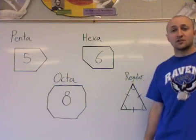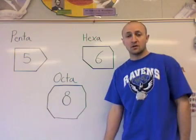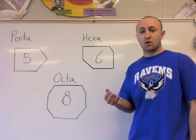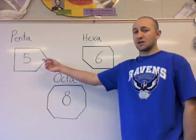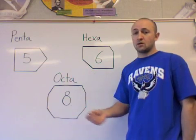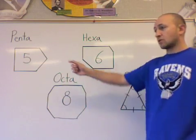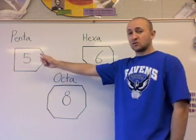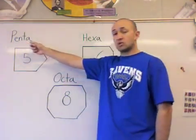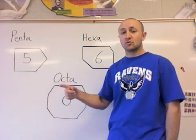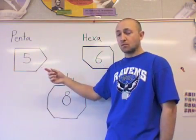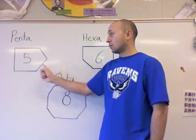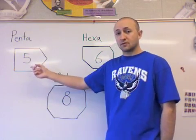We're going to finish today's lesson by looking at polygons. Polygons are also shapes, but they're a little bit different from quadrilaterals because polygons can have more than four sides. We're going to look first at what's called a pentagon. The key is to look at the prefix of the word — penta — which means five. So a pentagon is going to be any shape made up of five sides: 1, 2, 3, 4, and 5. Pentagon, five sides.